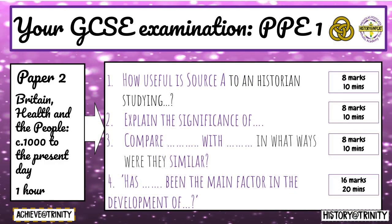Students will answer four questions on Paper 2. The paper is worth 40 marks and lasts an hour. For Question 1, students will be asked to evaluate a source and should spend 10 minutes on it. Questions 2 and 3 require analytical writing using contextual knowledge, spending 10 minutes on each. Question 4 is an essay question requiring students to make a judgement on the significance of a change factor on a medical development over the 1,000-year period, and they should spend 20 minutes on it.